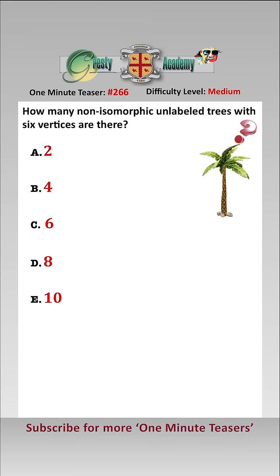The hardest part of this is understanding the term. So non-isomorphic unlabeled basically means we don't need to label our vertices ABC, etc.